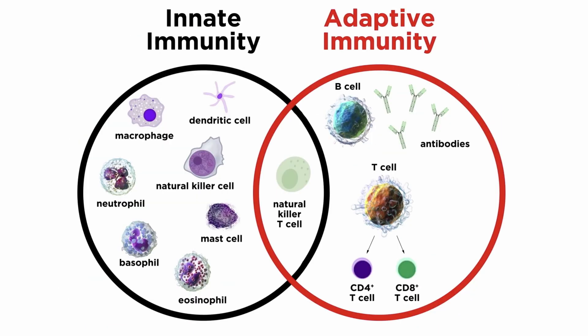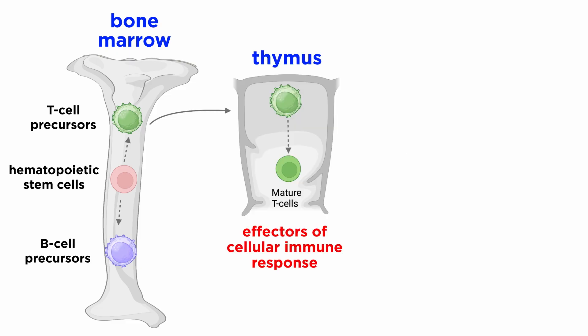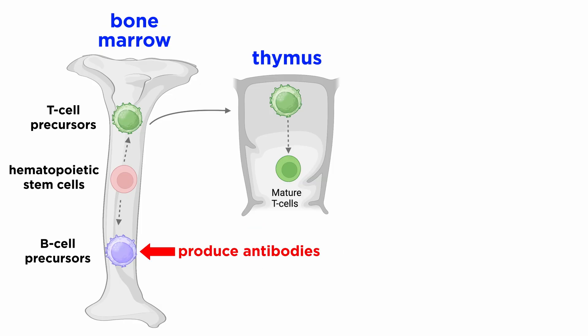Over the next few tutorials we will investigate the incredible mechanisms by which this system operates. Lymphocytes originate in, and are activated in, lymphoid organs that are a part of the lymphatic system. T cells, which are the effectors of cellular immune response, mature in the thymus, and B cells, which are the antibody-producing cells, arise in the bone marrow.